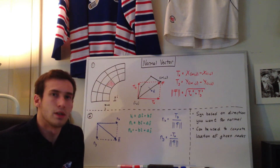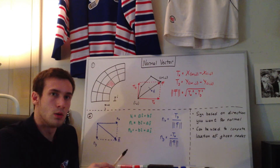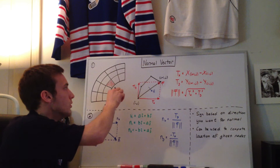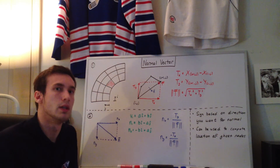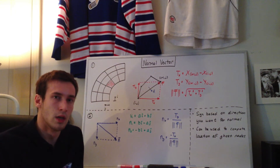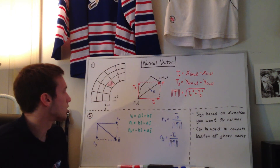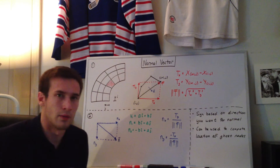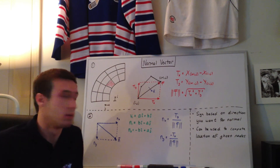The reason is that if you need to find the locations of ghost nodes — which are nodes outside of the actual physical curvilinear grid — you need to know what the normal vectors are of the surfaces. I'll have a ghost node video posted after this one.